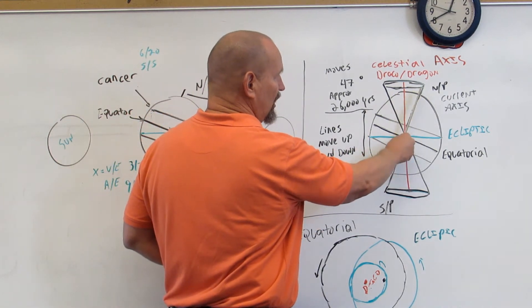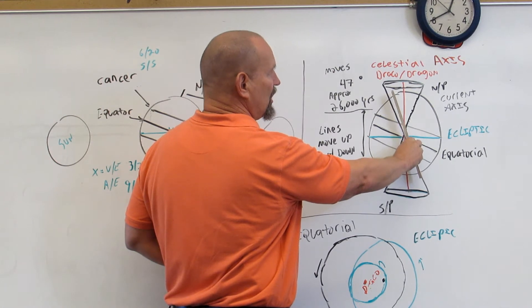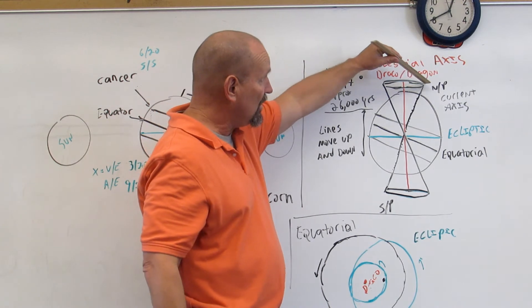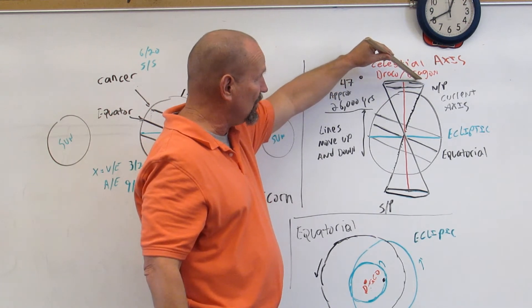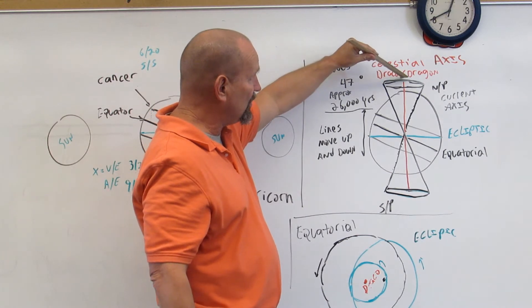This line right here is also seen here, but it's showing it in a different position. There's a reason for it. It's because over time, this line moves around this circle up here, crosses over the celestial axis, and comes to this point right here.